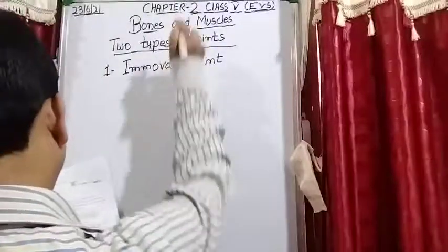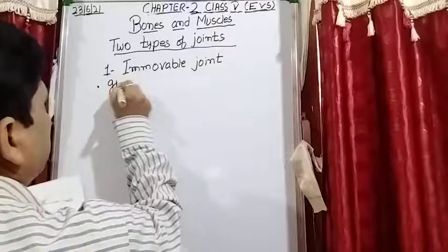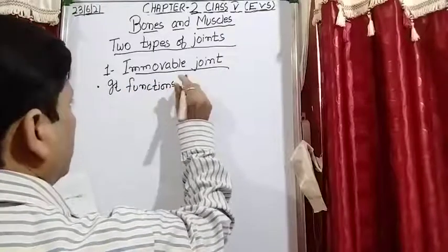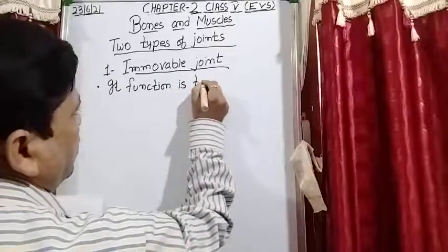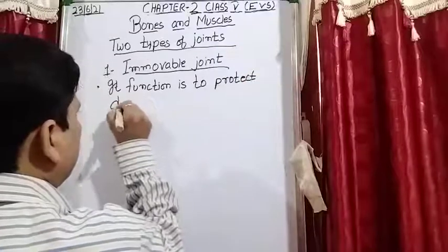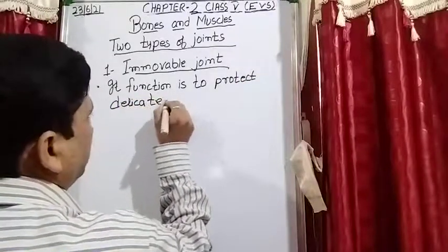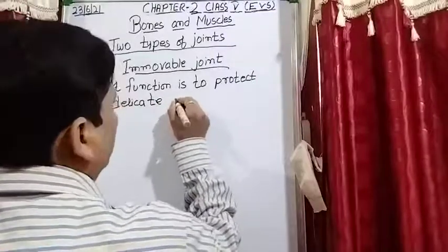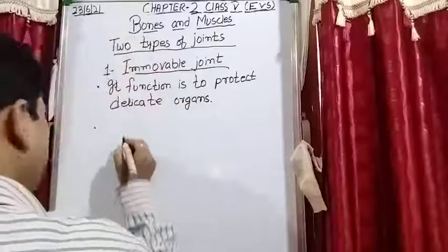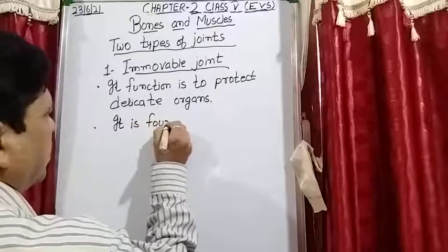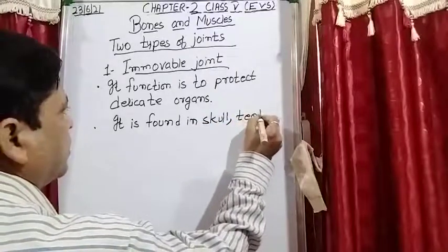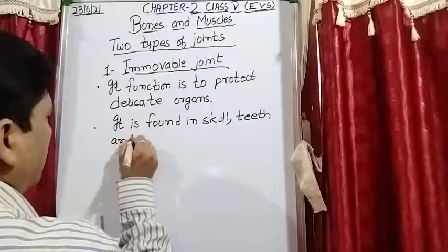The function of the immobile joint is to protect organs. This type of joint is found in the skull, teeth, and pelvis.